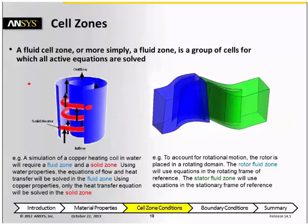Because we can define different kinds of cell zones, it allows us to do things like the conjugate heat transfer problem, or rotating machinery example that we see on the slide here.